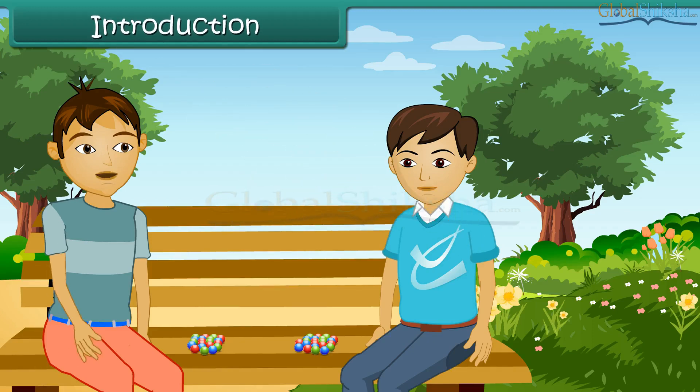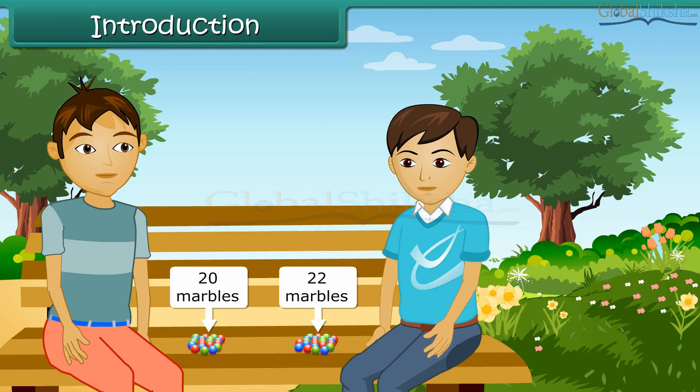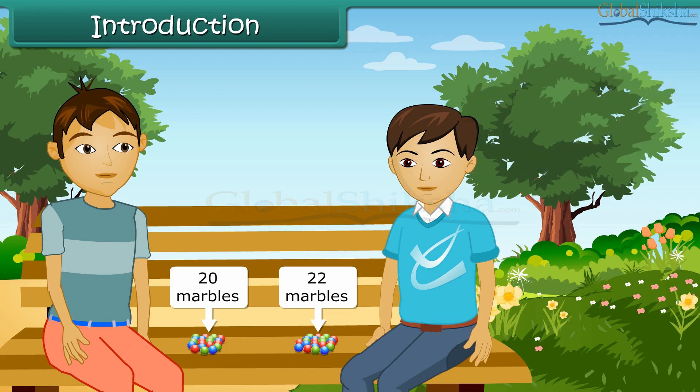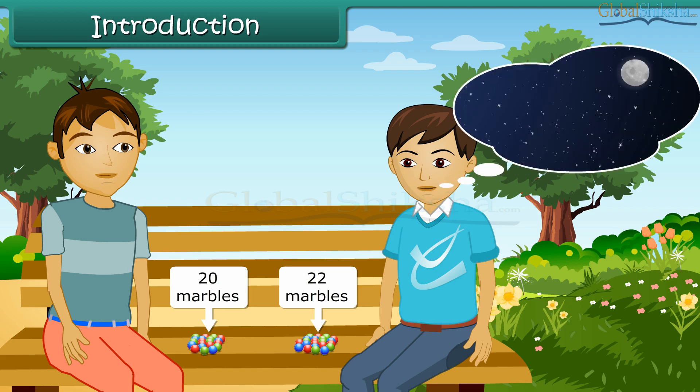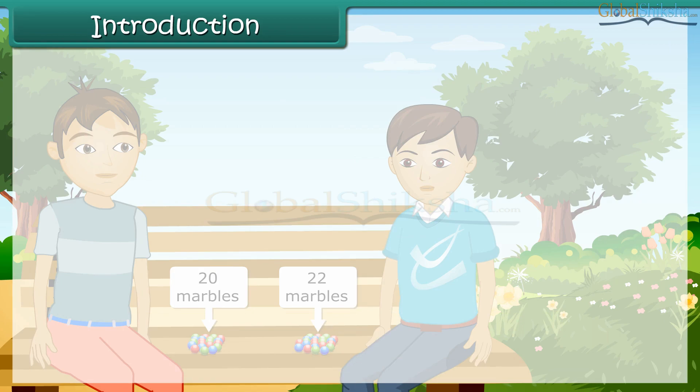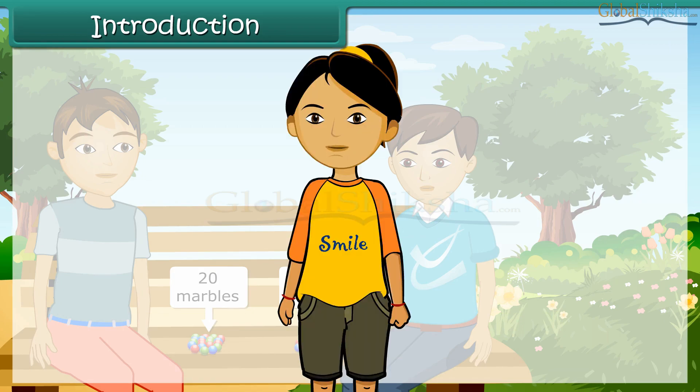I have twenty marbles. I have twenty-two marbles. Wow! I have more than you. We can count the things around us like vegetables, cars, etc. Certain things cannot be counted like stars in the sky, hair on our head, etc. Mathematically, you are talking about whole numbers. Let us learn about whole numbers in this lesson.